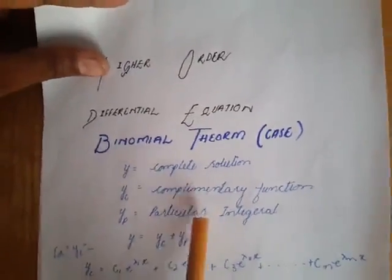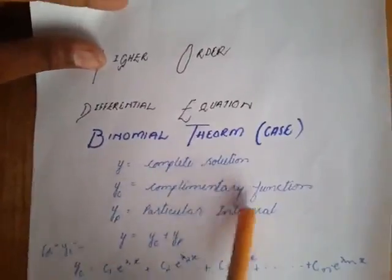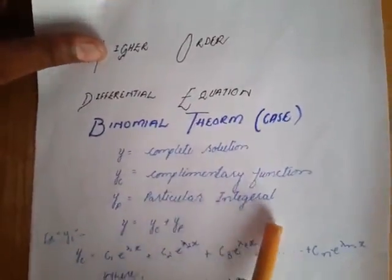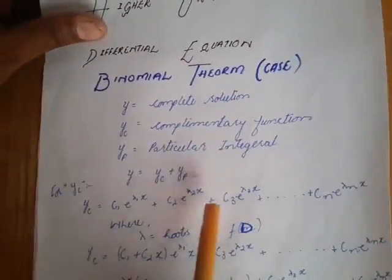y has two parts: yc and yp. yc is complementary function, yp is particular integral. y is equal to yc plus yp.